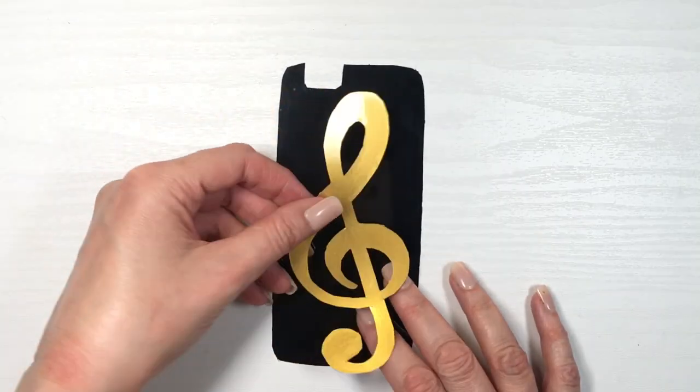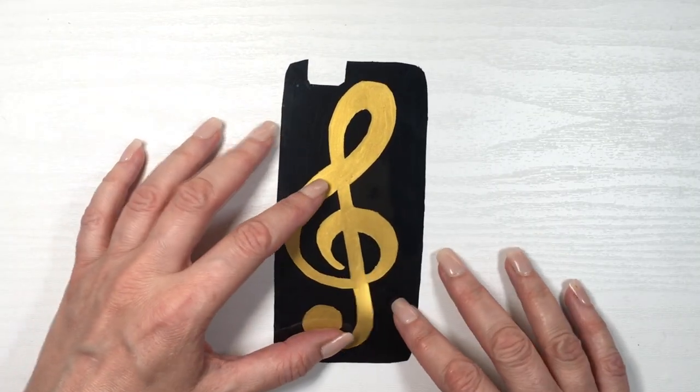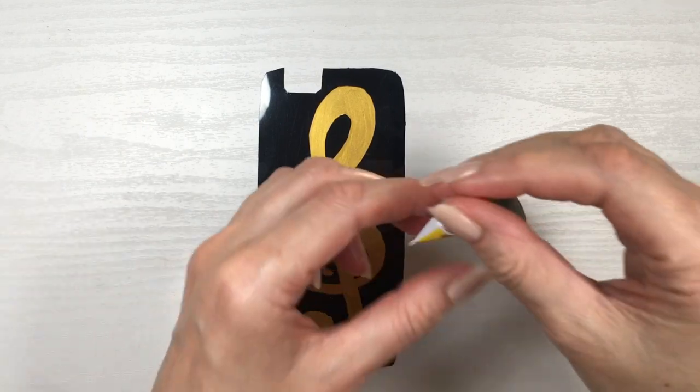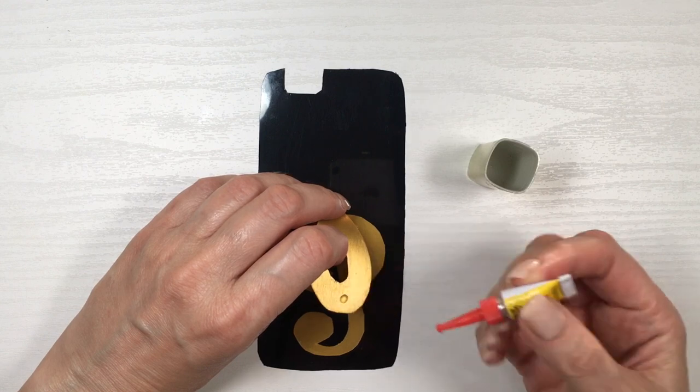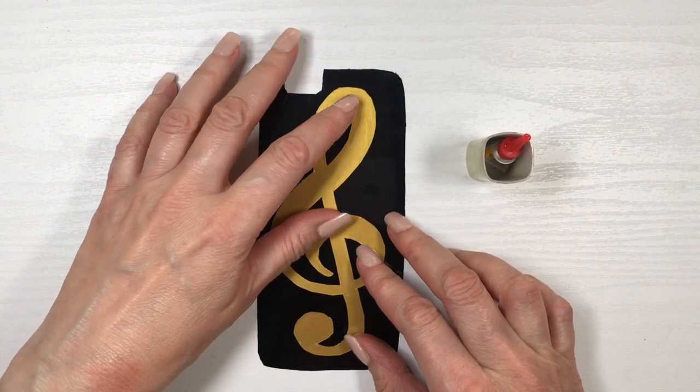Then I'm going to be placing my music note on top of my black background. Place it wherever I want it to be. Settle first. Just grab my glue, my super glue. Less is more with this glue. You just need a tiny, tiny drop.